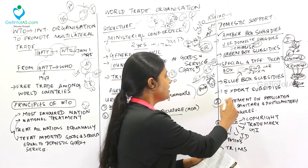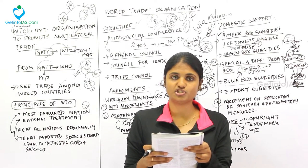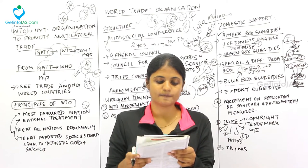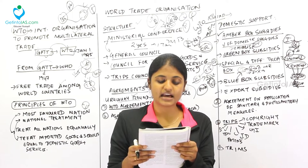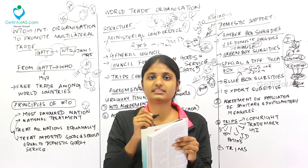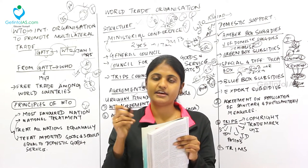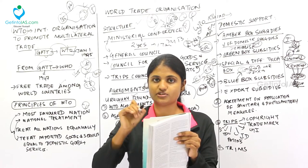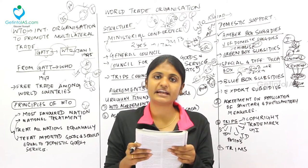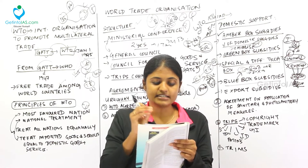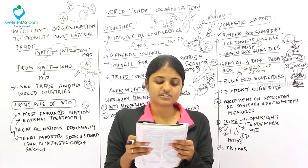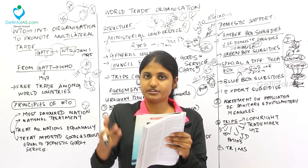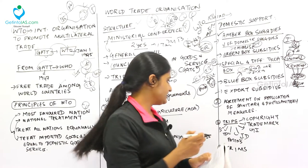The Agreement on Application of Sanitary and Phytosanitary Measures (SPS) sets basic rules to ensure food safety and the life and health of plants and animals in member countries. Member countries are allowed to set health and hygiene standards for imported products. However, these standards should be non-discriminatory, scientifically justifiable, and not prohibitive in nature — they should promote trade, not restrict it.